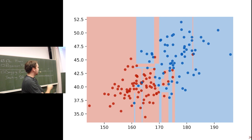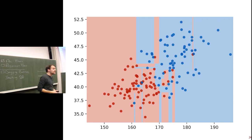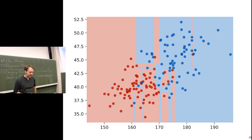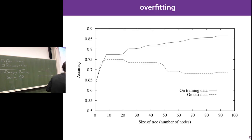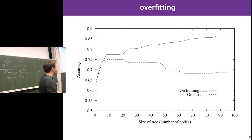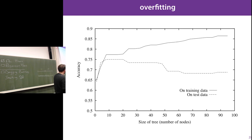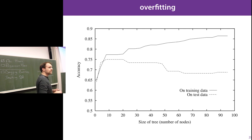The resulting decision boundary in feature space looks like piecewise axis-aligned line segments — a staircase shape. Decision trees are very powerful, but they are extremely prone to overfitting, especially when used as a single model. As you allow the tree to grow larger, training accuracy goes up, but validation and test accuracy go down — classic overfitting.